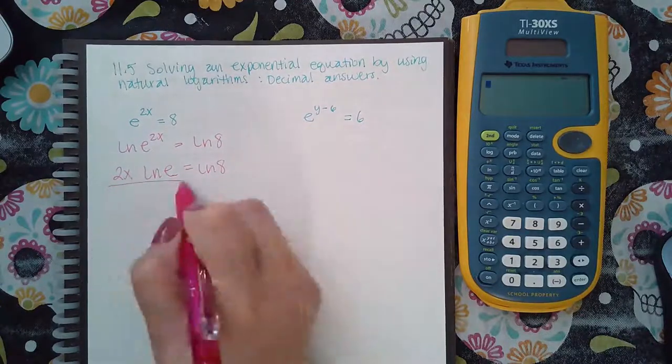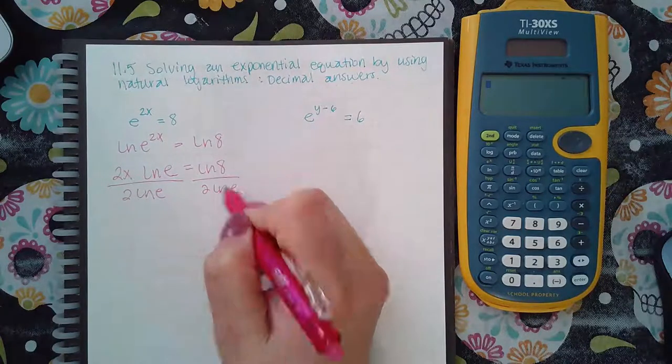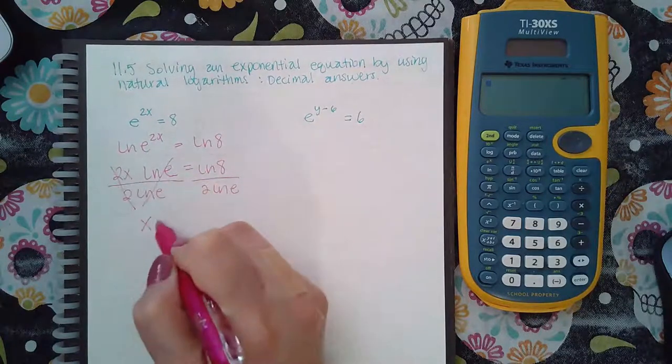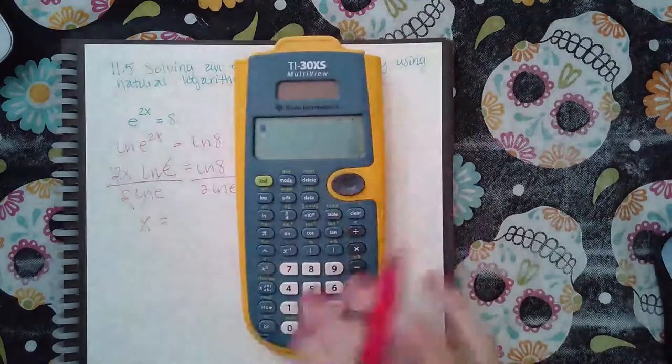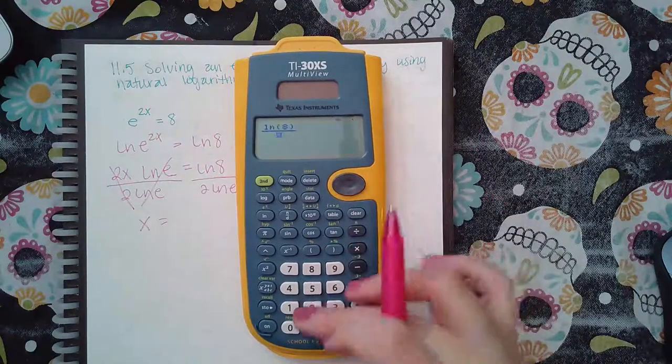Then you're going to divide by 2 ln(e). Those cancel and you get x equals, and then just type that in the calculator. Really there's nothing too different because I use the ln on the other example as well.